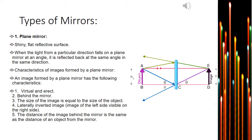We have the phenomenon of lateral inversion, which is one of the characteristics of a plain mirror. When the image is reflected through a plain mirror, it is left-right inverted — the left side appears to be the right one and the right appears to be the left one. Also, the distance of the image from the mirror is the same as the distance of the object from the mirror.